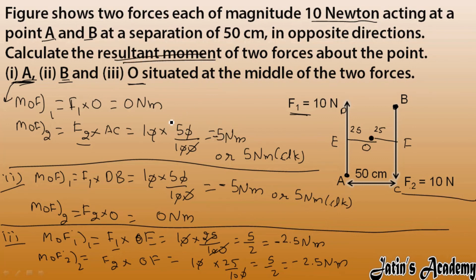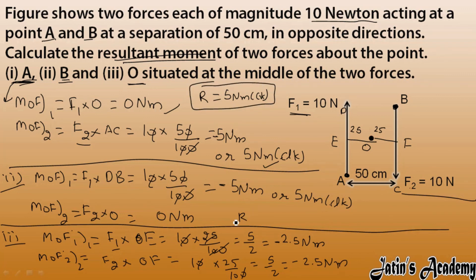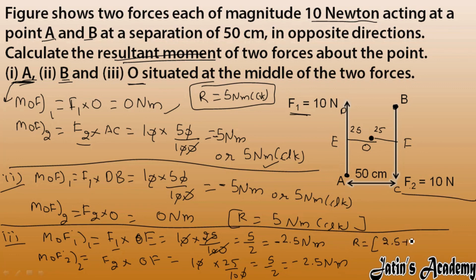Now the resultant moment of force: in Case 1 (about A), 0 + 5 = 5 Newton meters clockwise. In Case 2 (about B), 5 + 0 = 5 Newton meters clockwise. In Case 3 (about O), 2.5 + 2.5 = 5 Newton meters clockwise. In every case we get the same resultant moment of force, even though the fixed points differ — demonstrating the property of a couple.